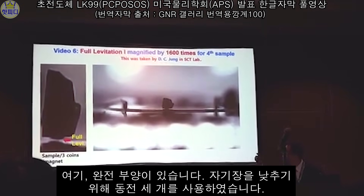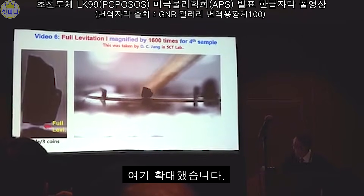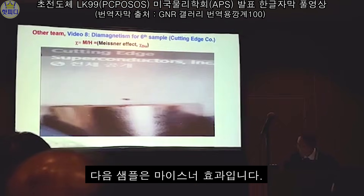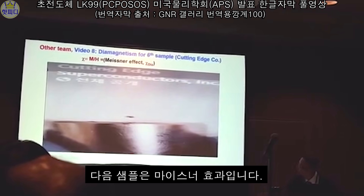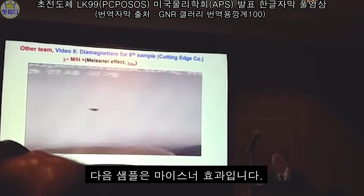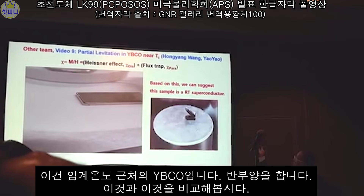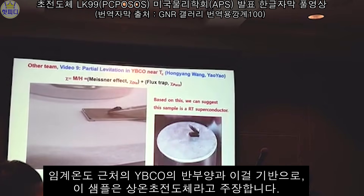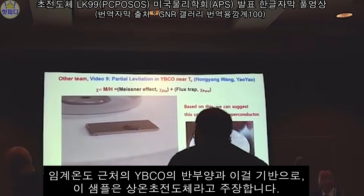So it's a full relaxation. In order to reduce the magnetic field, use three coins to magnify the vortex. This one is a yarn — yeah, this one is a yarn. On the basis of this, I suggest this sample is a type-II superconductor.